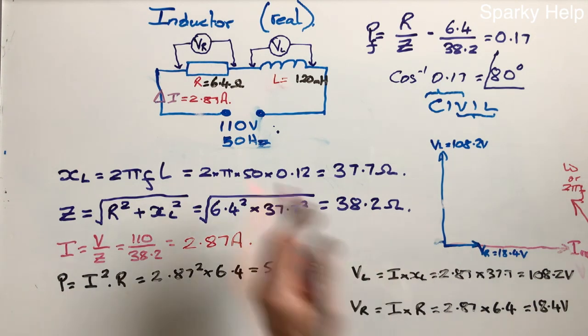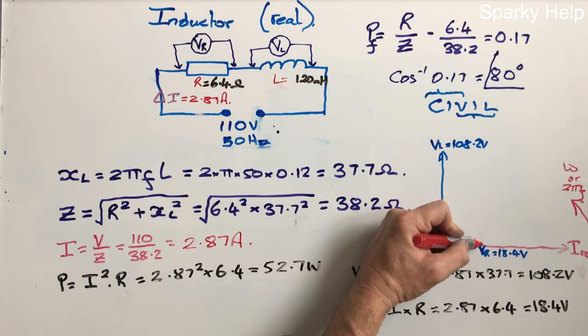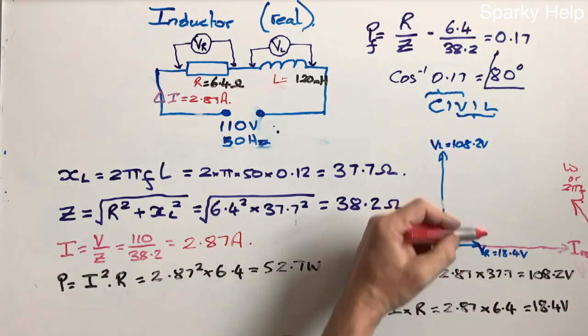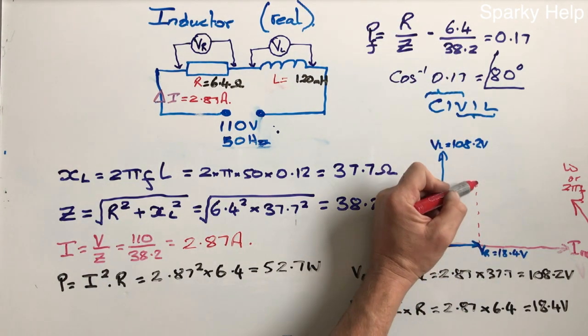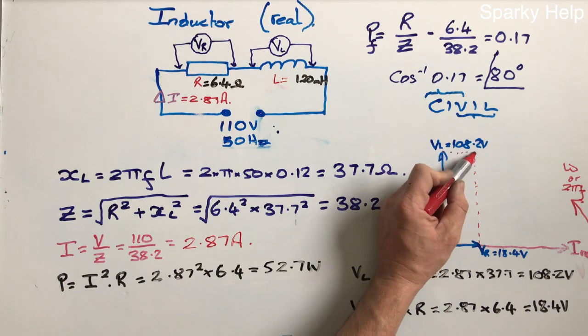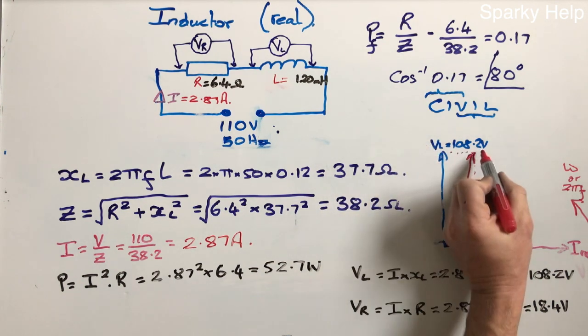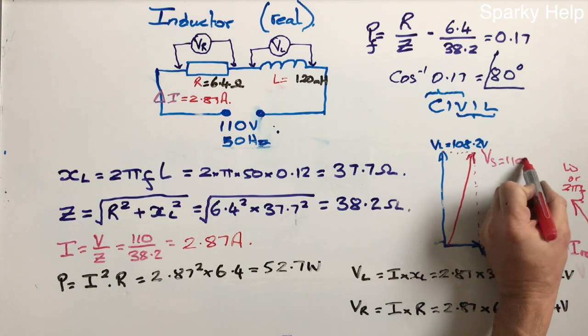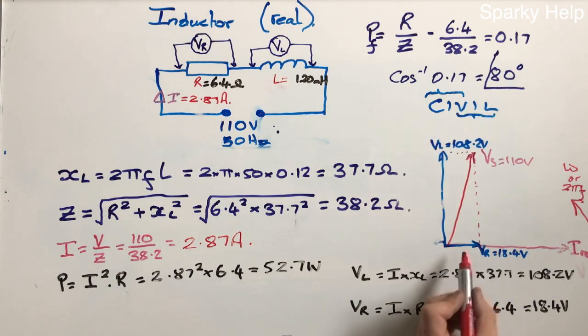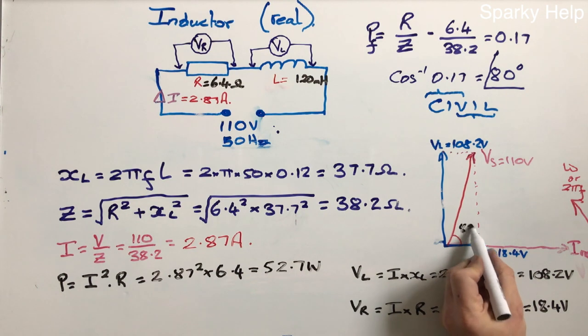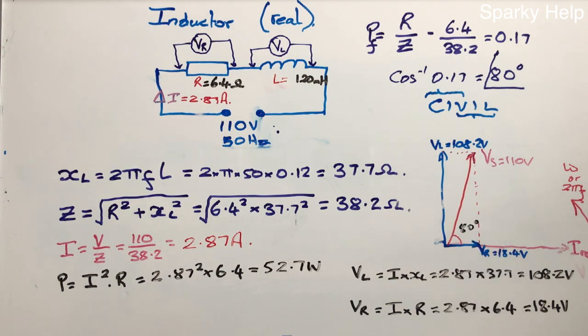Now VS, the supply voltage, is 110. VS is the sum of these two. Now you can't add them up because they're both going in different directions. So the phasor sum of those is where they join, and that would be VS, which is 110. Now that angle there is where our 80 degrees comes in. So that is the phasor diagram. There's VS, there's I, and they're out of phase by 80 degrees as calculated.